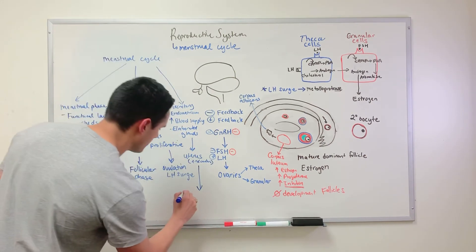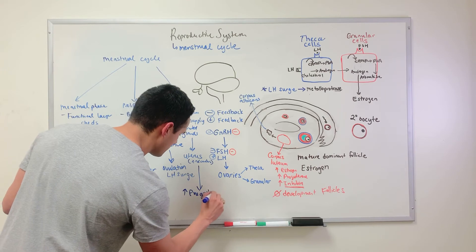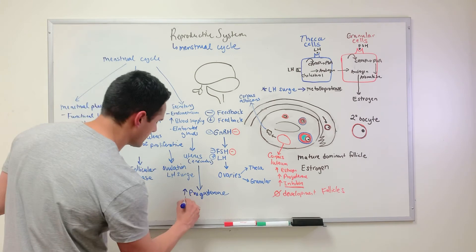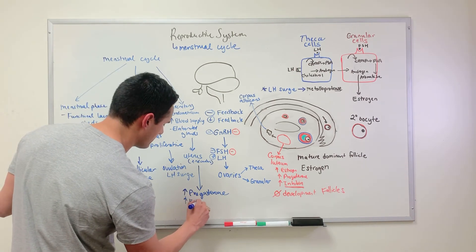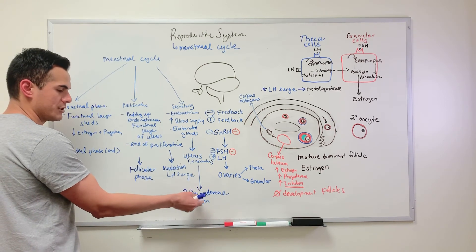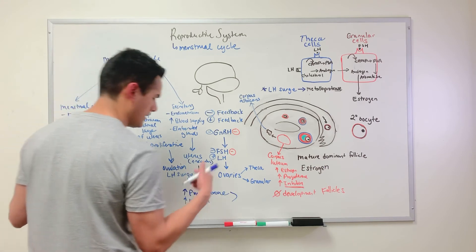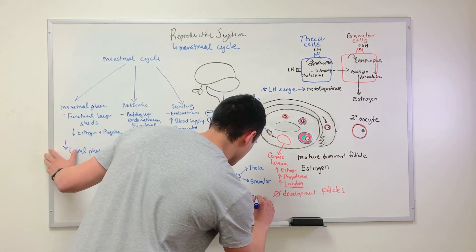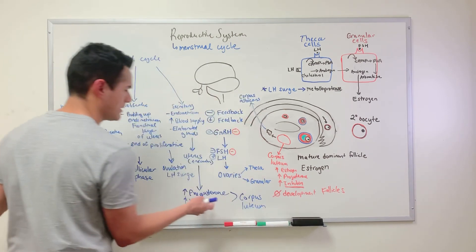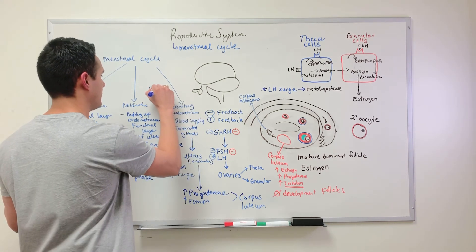This is due to increasing levels of progesterone, and there are also increasing levels of estrogen as well. What's secreting these levels of progesterone and estrogen is the corpus luteum. This is what's happening during the luteal phase.